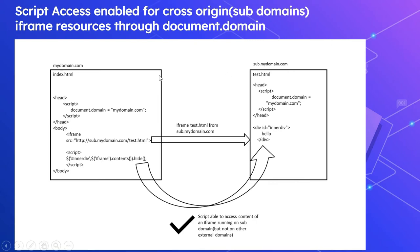With the same setup — mydomain.com/index.html and sub.mydomain.com/test.html — we are iframing test.html and trying to access the inner div element within it. The difference now is that index.html has document.domain set to mydomain.com (the parent domain), and test.html also has document.domain set to mydomain.com. With both set to the parent domain, the behavior is different: we are able to access the element within the iframe and hide it, because the page now passes the same-origin check.